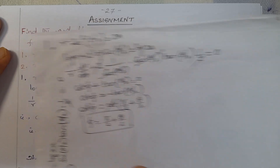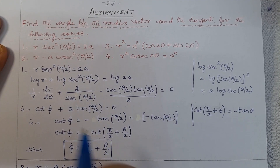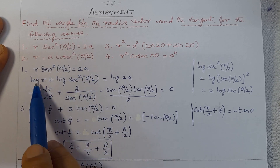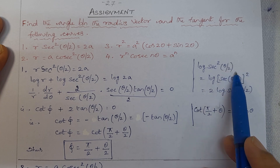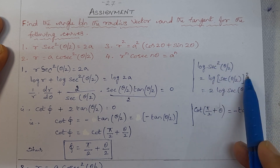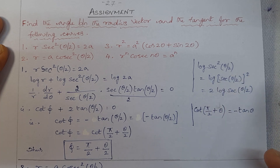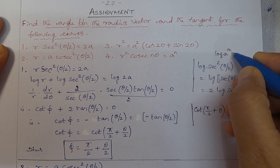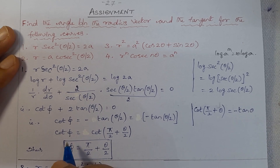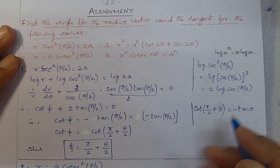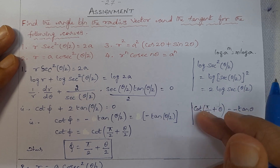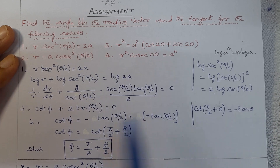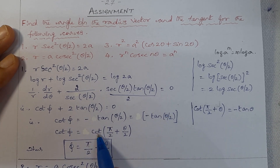For the solution, write the question as it is, then apply log, then differentiate with respect to θ. The formula used: log(sec²(θ/2)) = 2·log(sec(θ/2)) using the rule log(aᵐ) = m·log a. The second quadrant identity: cot(90° + θ) = -tan θ. Applying this, cot φ = cot(π/2 + θ/2), so cot and cot cancel, giving φ = π/2 + θ/2.